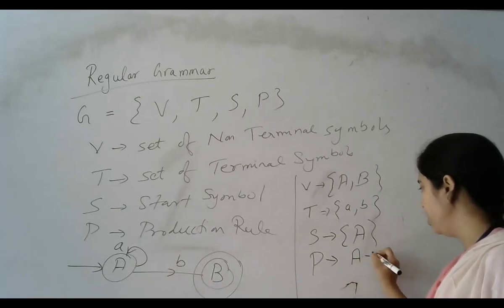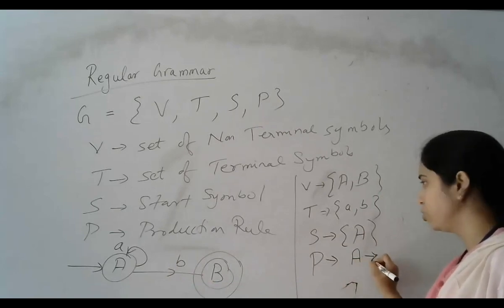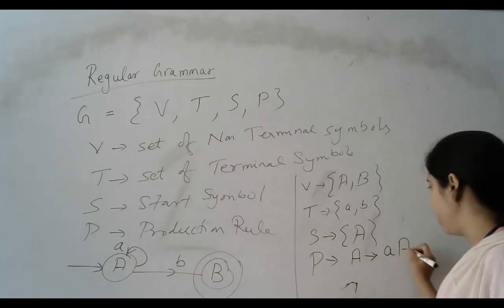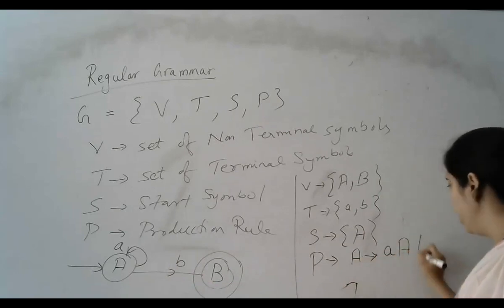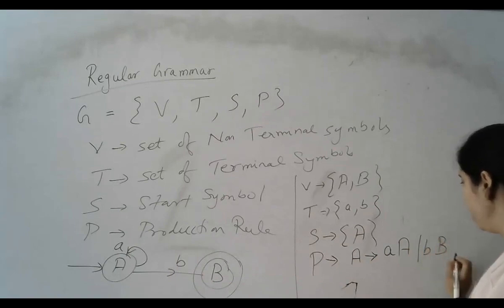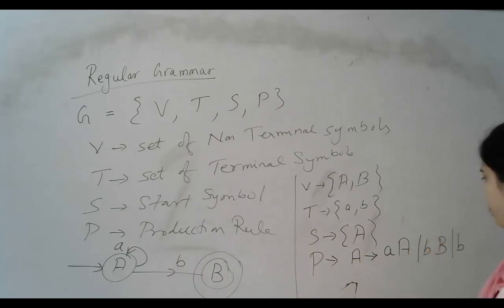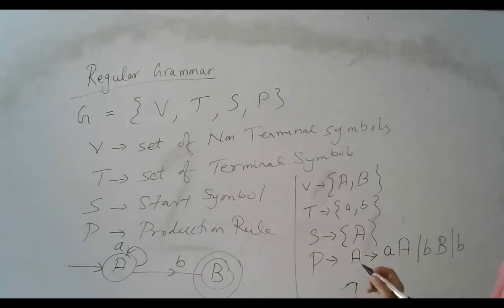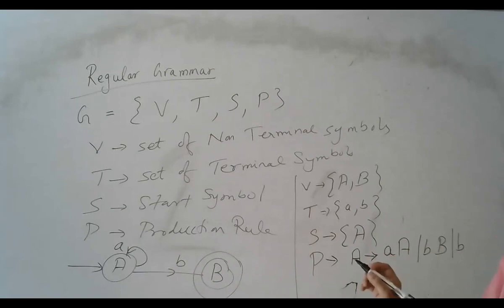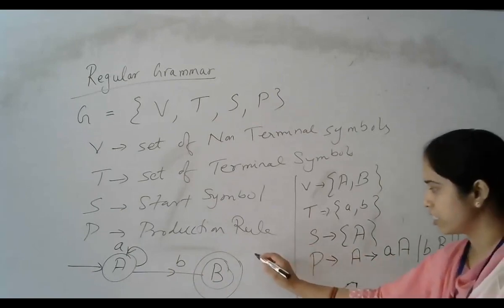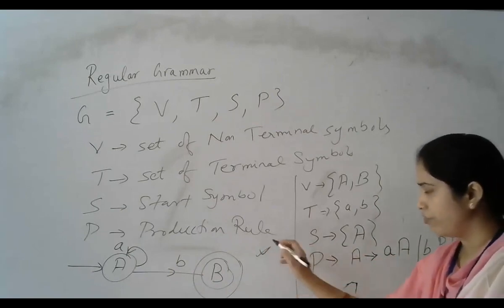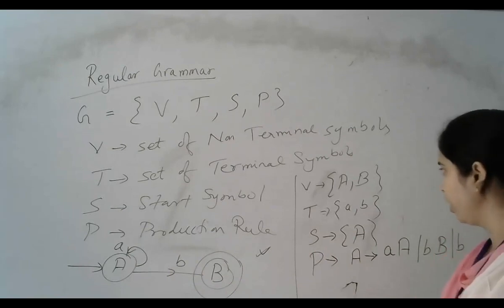A is the start symbol. A tends to — from A, reading A, we go to A; from A, reading B, we go to B; and B is the final state. And this is the production rule of this finite state machine.